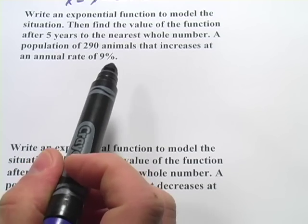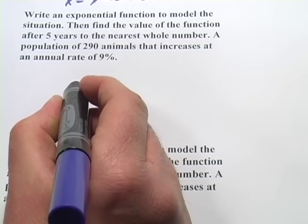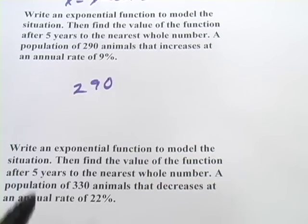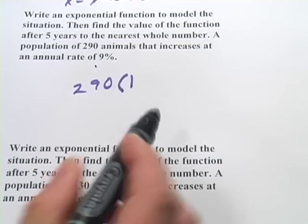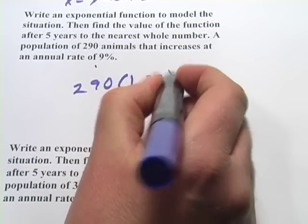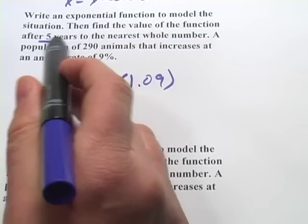that increases at an annual rate of 9%. So we start with the amount, the initial amount, that's 290. We multiply by 1 plus the percent of increase, so 0.09, and we take that to the number of years.